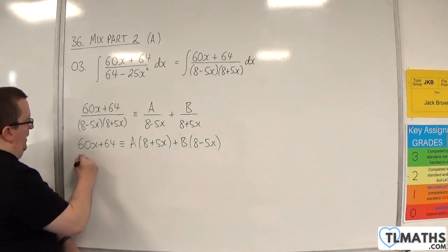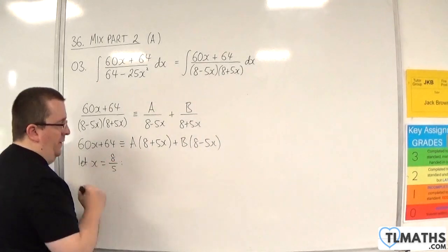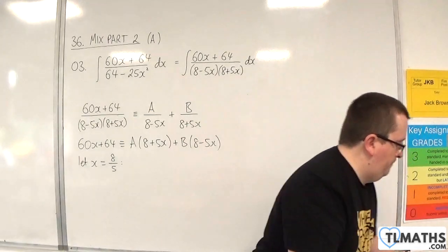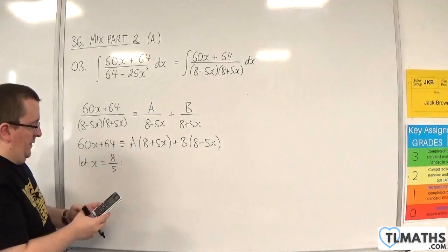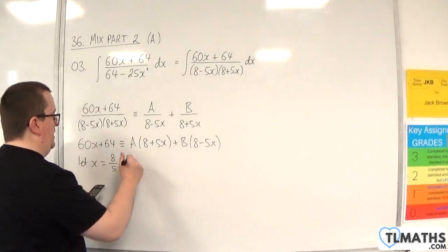So let's let x be 8 fifths first. So on the left hand side, we've got 60 lots of 8 fifths plus 64, which is 160.